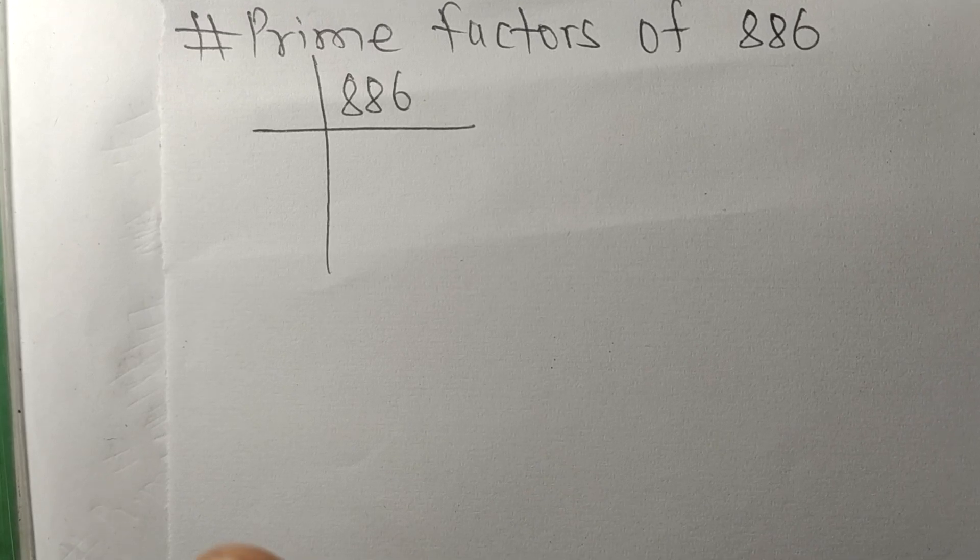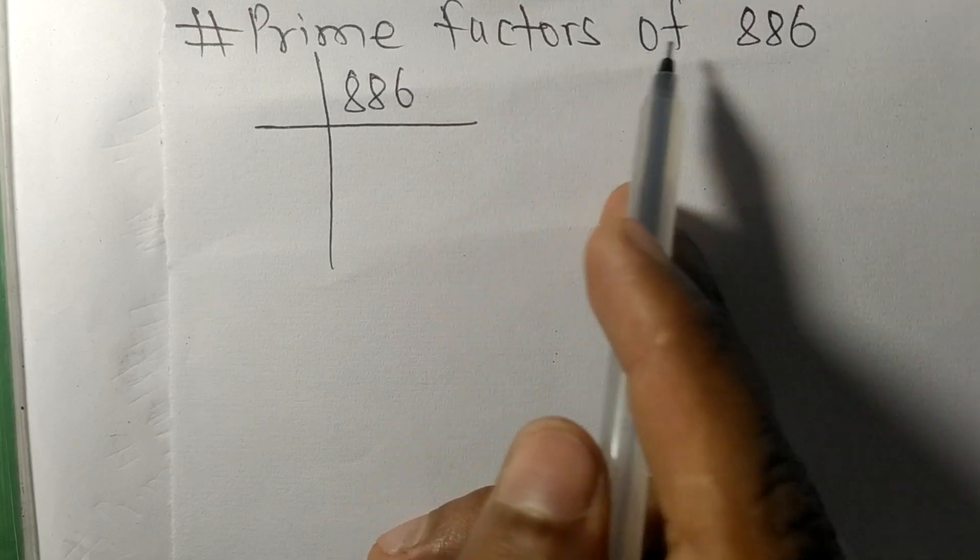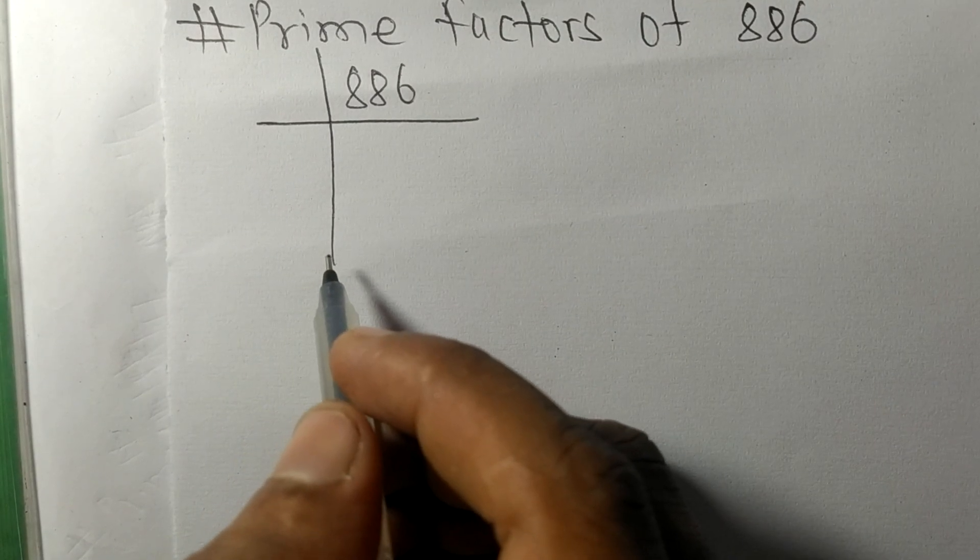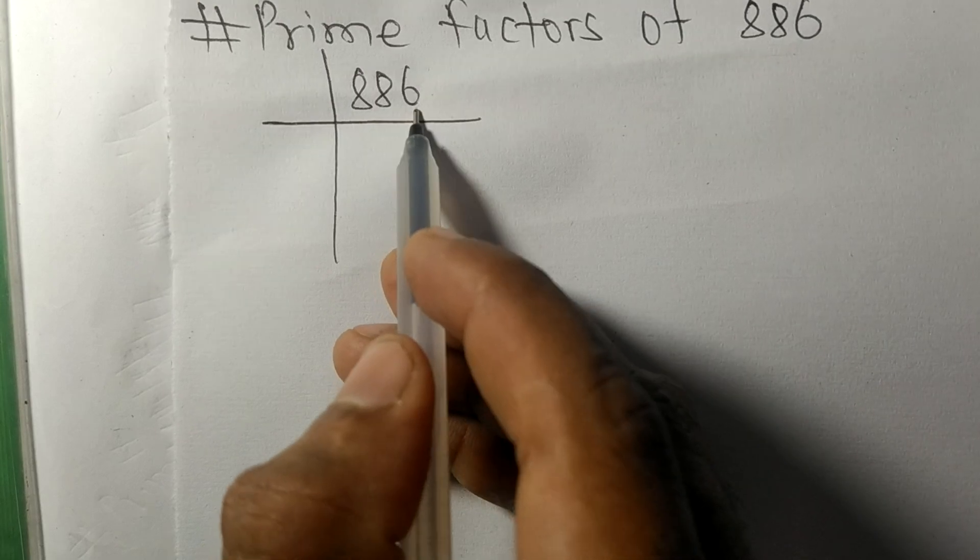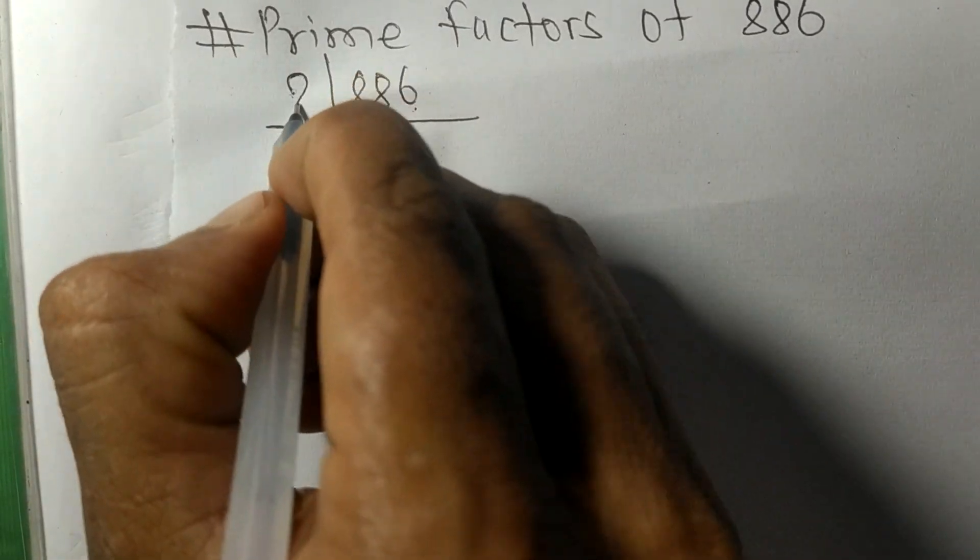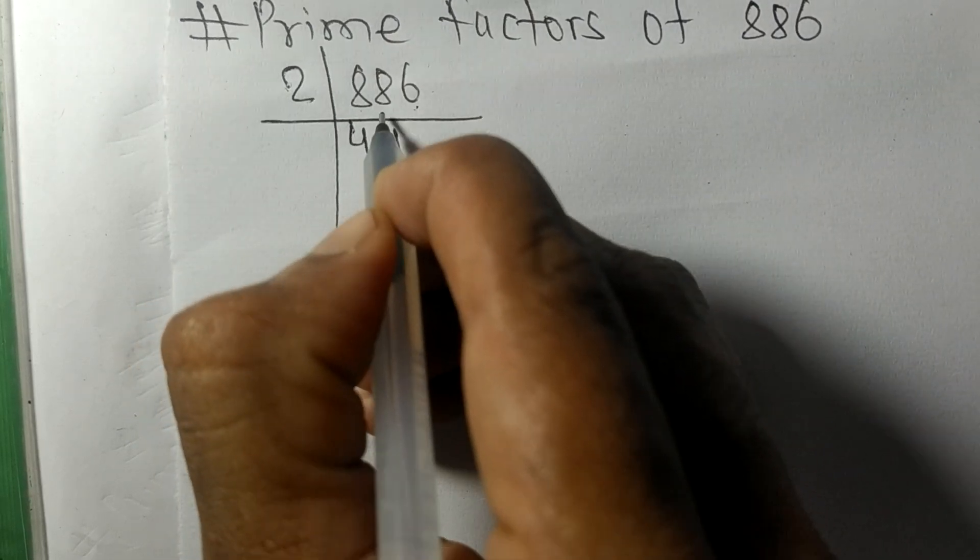So today in this video we shall learn to find the prime factors of 886. At last it contains an even number 6, so these whole numbers are divisible by 2. 2 times 4 means 8, 2 times 3 means 6.